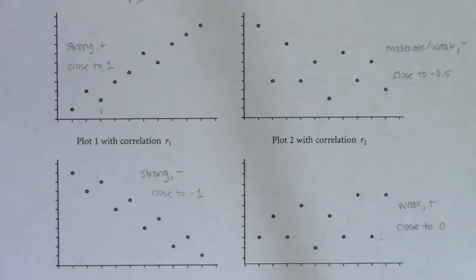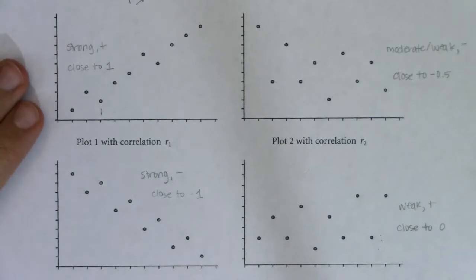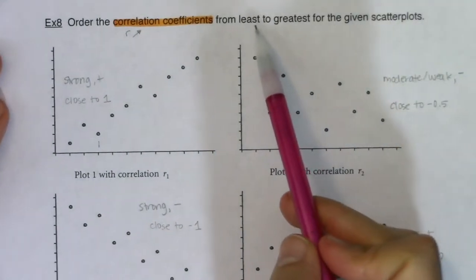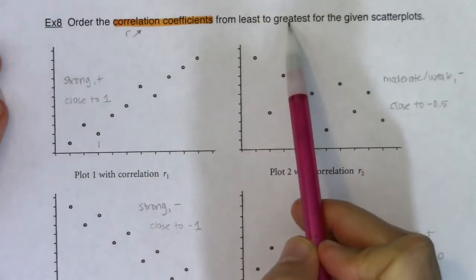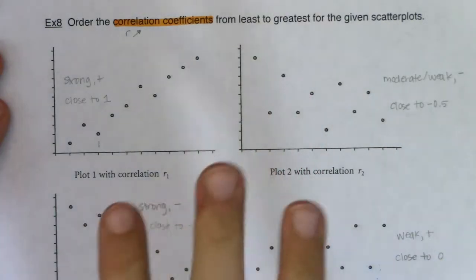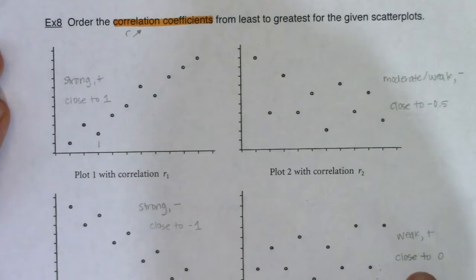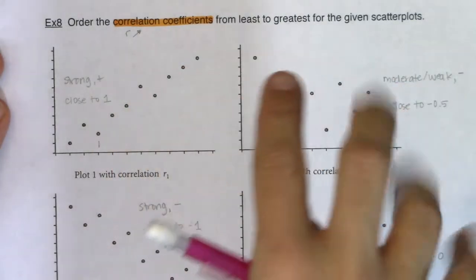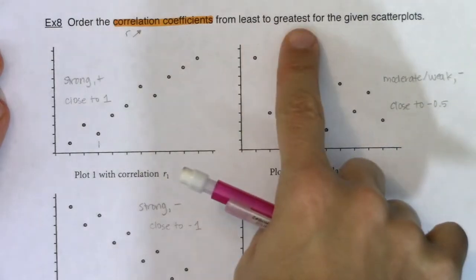So you want to be careful in reading this question because sometimes we might interpret it. This is asking us to rank these correlations from least to greatest in numerical value, not in strength. I'm not asking you to go from weakest to strongest. I'm asking you to go from smallest to largest.